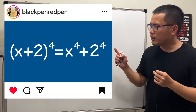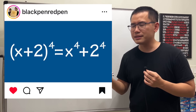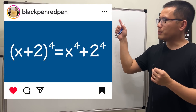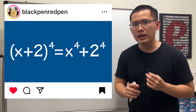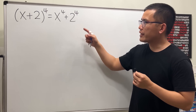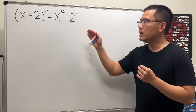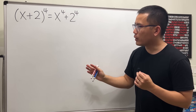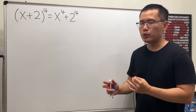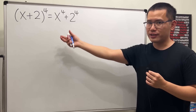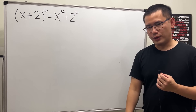When you first take a look at this right here, you might be thinking this is definitely not correct. Well, you are not supposed to distribute the exponent like that. But don't worry — this is not an identity, meaning it is not true for all x values, but it's true for some x values, so we call this an equation.